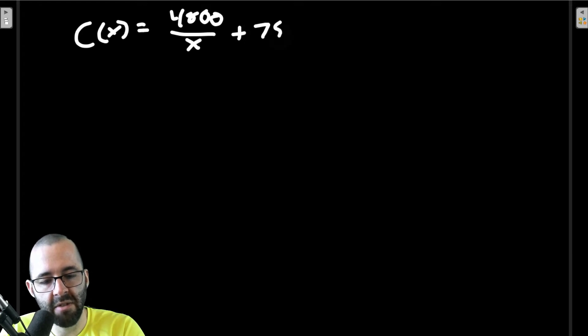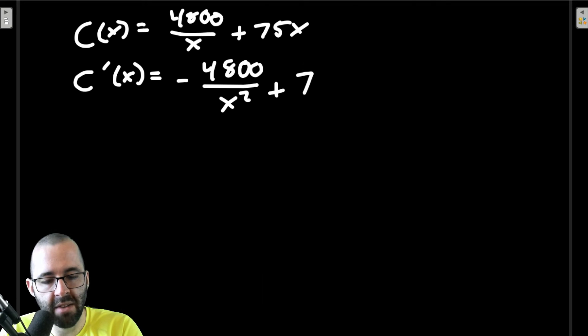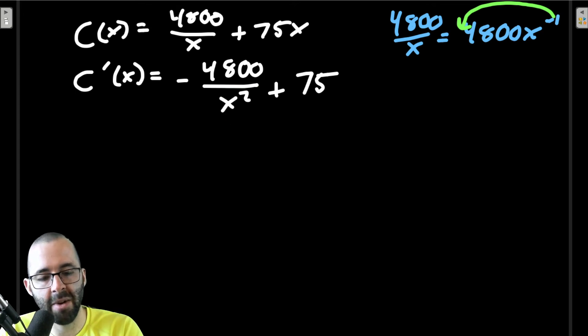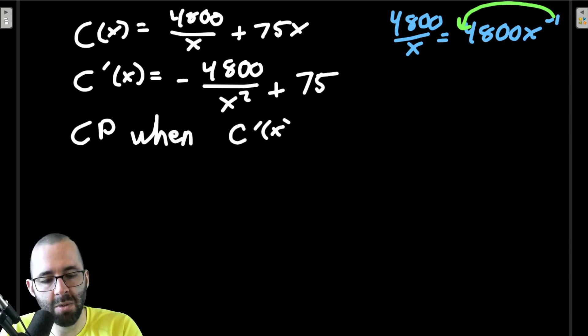Let's look at the derivative. Our cost function is C(x) = 4800/x + 75x. What is the derivative? Use the power rule: C'(x) = -4800/x² + 75. Remember 4800/x is 4800 times x^(-1), so when we take the derivative the negative 1 comes down and we subtract 1, which is why this becomes x^(-2), which is why there's an x squared in the denominator.